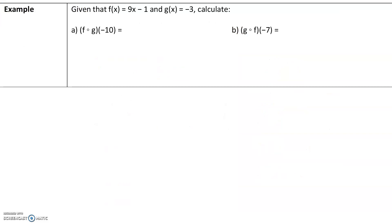Let's take a look at the next example. Instead of graphs, we are given two different functions: f of x equals 9x minus 1 and g of x equals negative 3. Notice that this is a constant function, which means no matter what the input is for g, the output will always be negative 3.